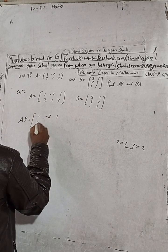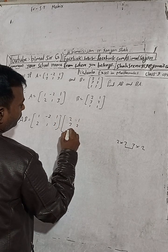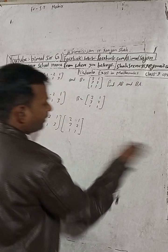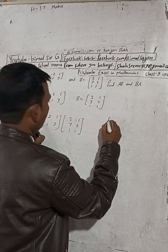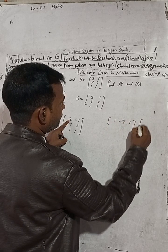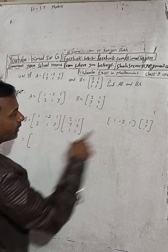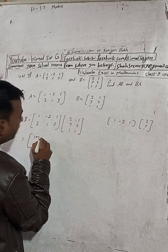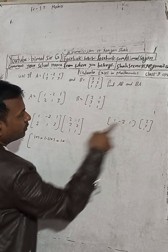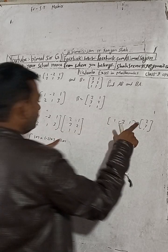Let's find AB. We write A as [1, -2, 1; 2, 1, 3] and B as [2, 1; 3, 2; 1, 1]. For the first element, we take the first row of A: 1, -2, 1 and the first column of B: 2, 3, 1. So: 1×2 + (-2)×3 + 1×1.